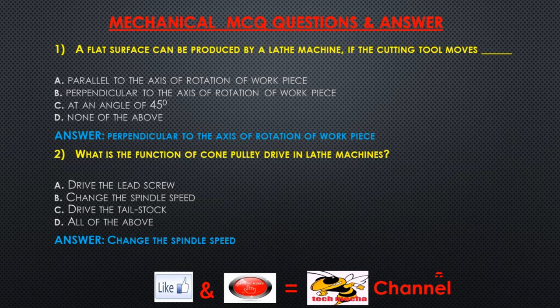Question 1: A flat surface can be produced by a lathe machine if the cutting tool moves — A) parallel to the axis of rotation of the workpiece, B) perpendicular to the axis of rotation of the workpiece, C) at an angle of 45°, D) none of the above. Answer: Perpendicular to the axis of rotation of the workpiece.